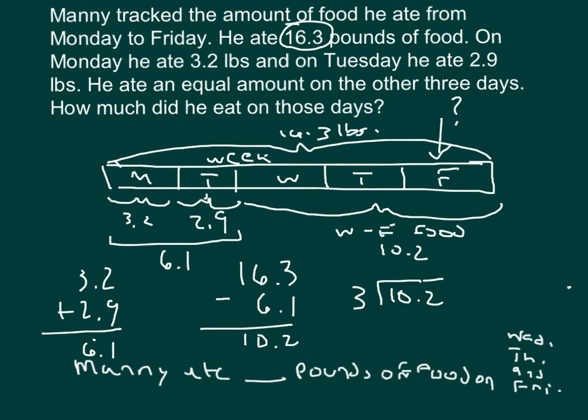3 cannot go into 1, 3 does go into 10, 3 whole times. 3 times 3 is 9, 10 minus 9 is 1, and we bring down the 2. 12 divided by 3 is 4. 4 times 3 is 12, and 12 minus 12 is 0. Make sure I place my decimal point there. So that's 3.4 pounds on each of Wednesday, Thursday, and Friday.